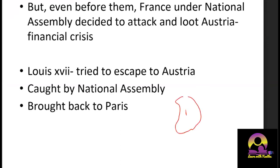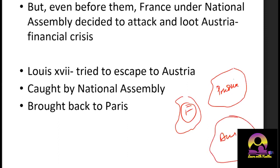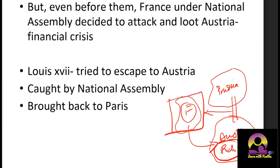Even before Prussia and Austria formally attacked, France and the National Assembly had already decided to attack and loot Austria because of financial crisis. France was here, Prussia was here, and Austria was here. These two had made a plan to attack France, but France was already planning to attack Austria — because Austria was richer, and France could gain financial assets to address its economic crisis.